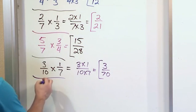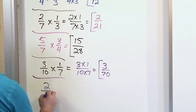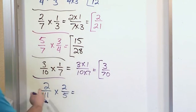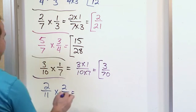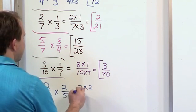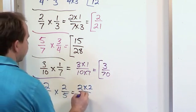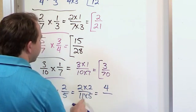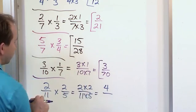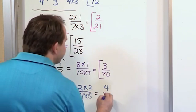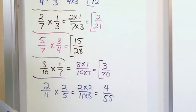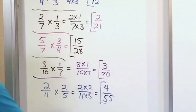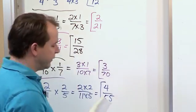For the final problem, let's say we have two elevenths and we're multiplying by two fifths. So again, I don't care about denominators when I multiply fractions. So on the top, two times two. And on the bottom, eleven times five. And so on the top, two times two gives me four. And on the bottom, eleven times five, if you think about your multiplication tables, is fifty-five. And I try to look at that and see if I can divide top and bottom by something, simplify it, and I really can't. So I just basically stop right there and I'm finished with the problem.